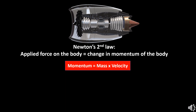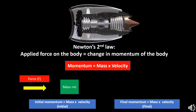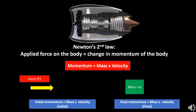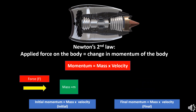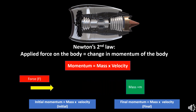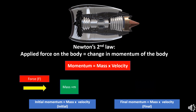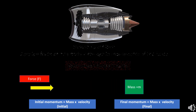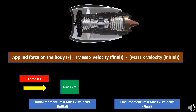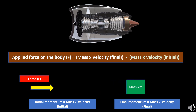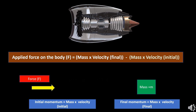Momentum is the product of mass times velocity of the body. We can express Newton's second law as F equals mass times velocity final minus mass times velocity initial. Now consider the air flowing through the engine.